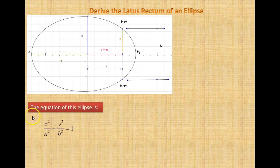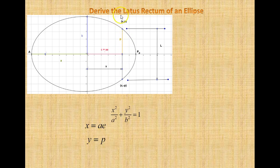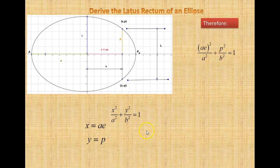The equation of this ellipse is X² / A² + Y² / B² = 1. As we defined previously, X is equal to the semi-major axis times the eccentricity, small e. And Y is equal to P, the latus rectum.